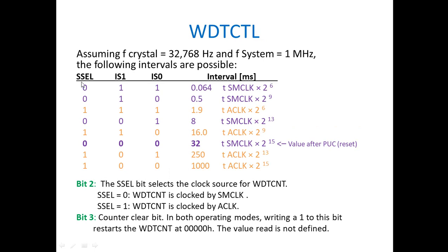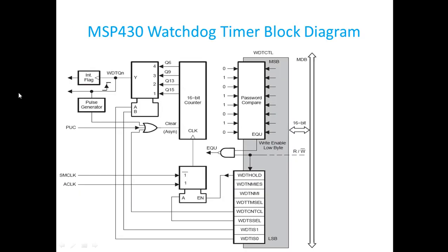Based on the selection, by default (WTTS=0) it takes SM clock; if WTTS=1, it takes A clock. The WTITS bits select the counter bit in descending order: 00 selects the 15th bit (maximum delay), 01 selects 13th bit, 10 selects 9th bit, and 11 selects the 6th bit.